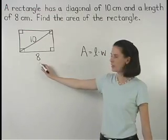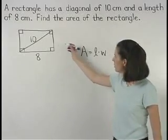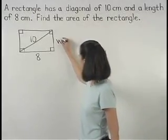And we're given that the length of the rectangle is 8 centimeters, but we don't know the width, which we can label in our diagram as w.